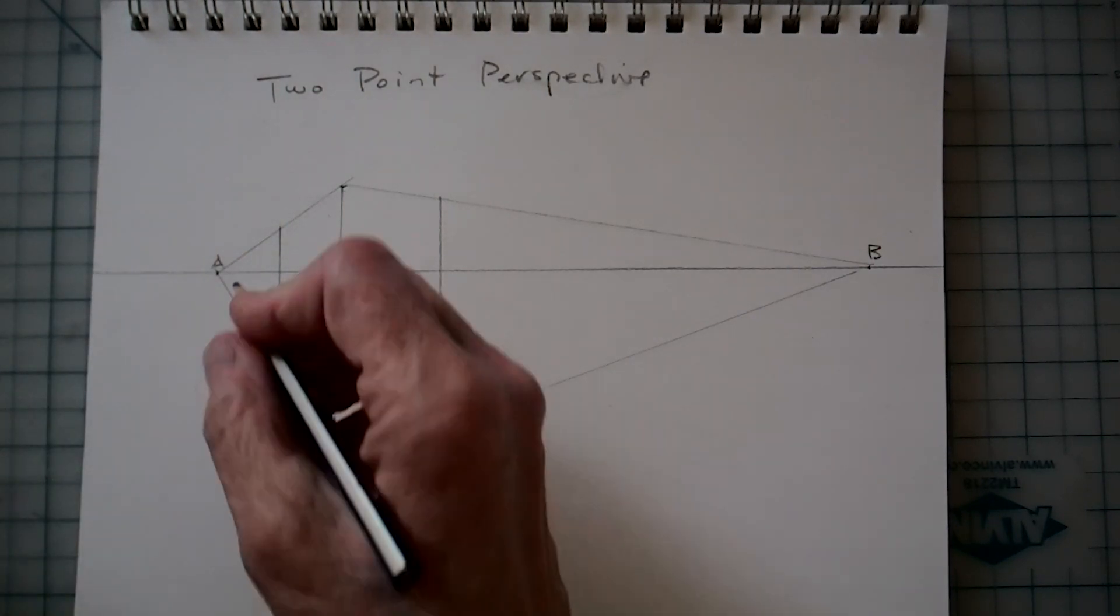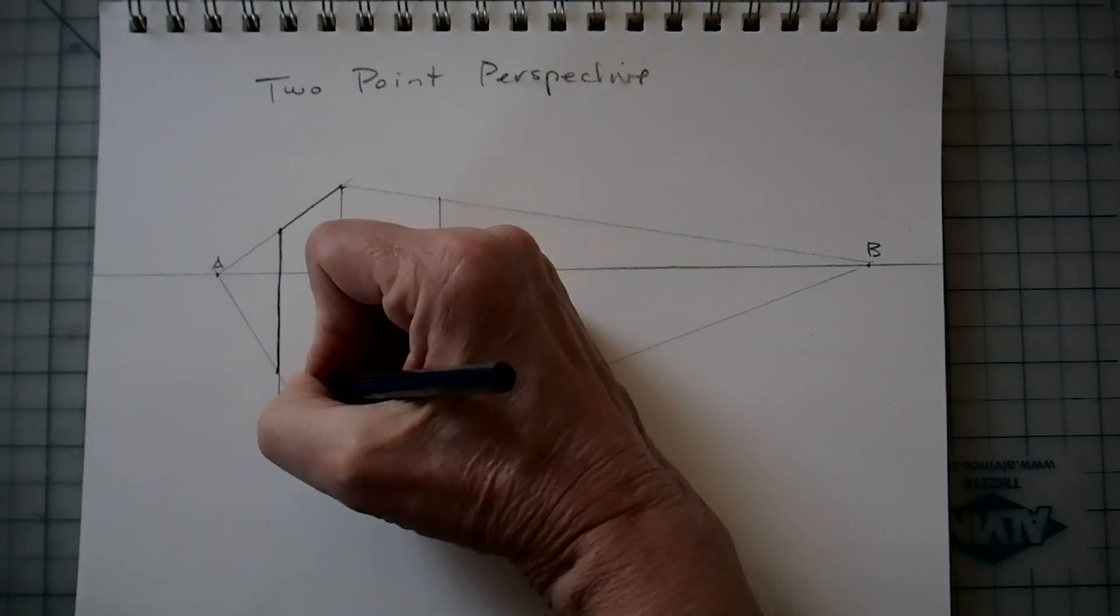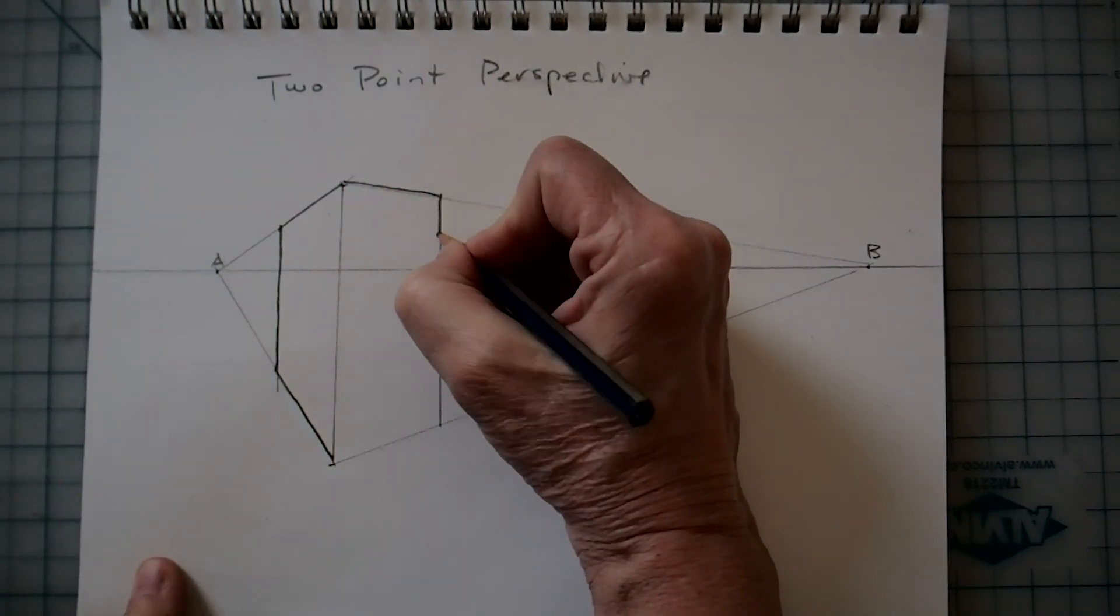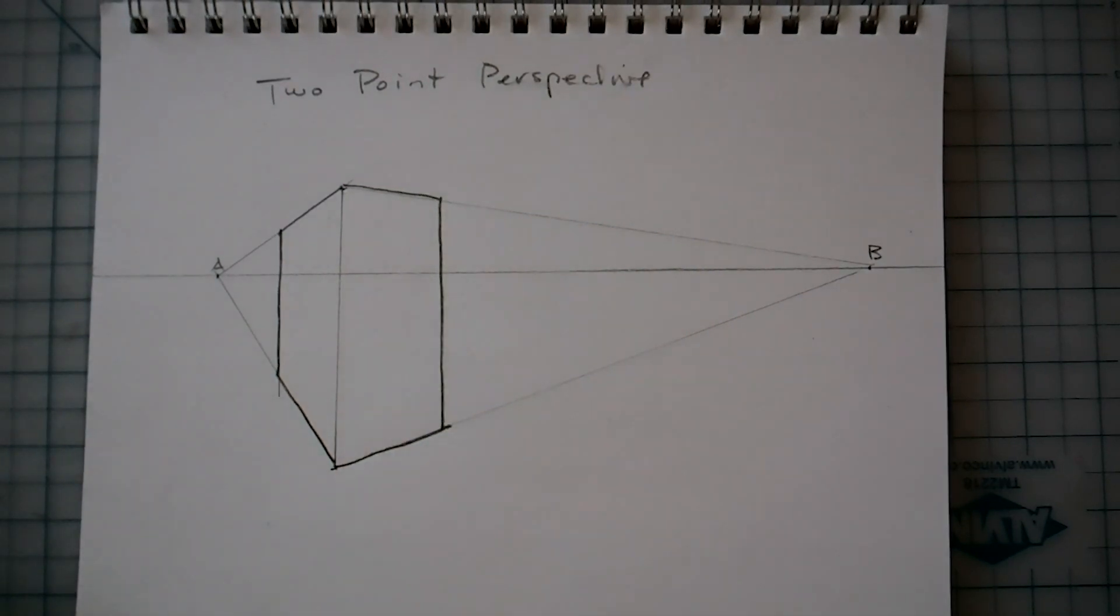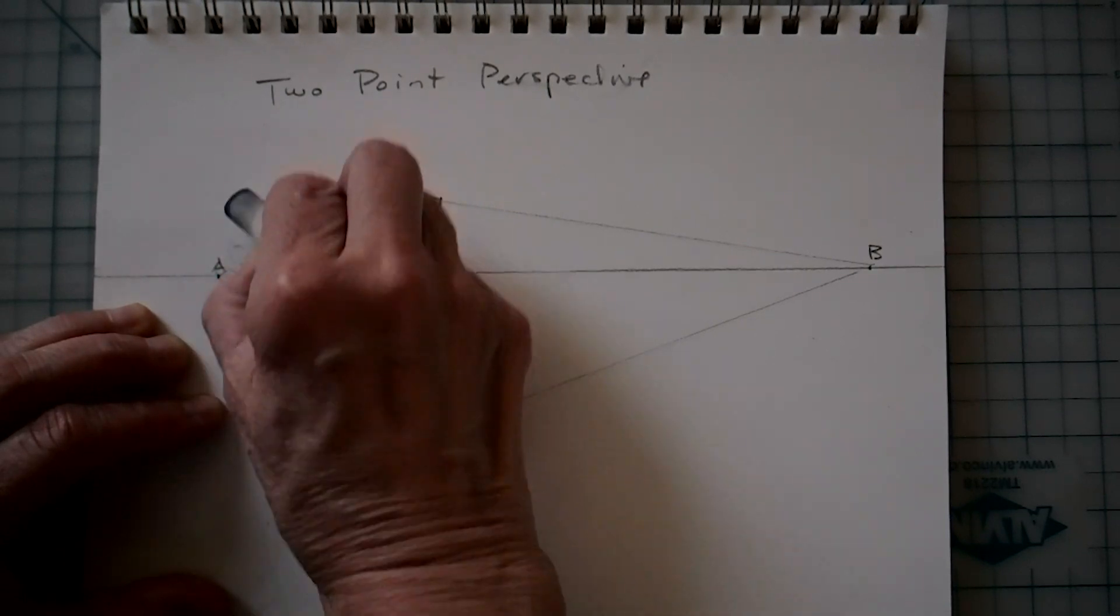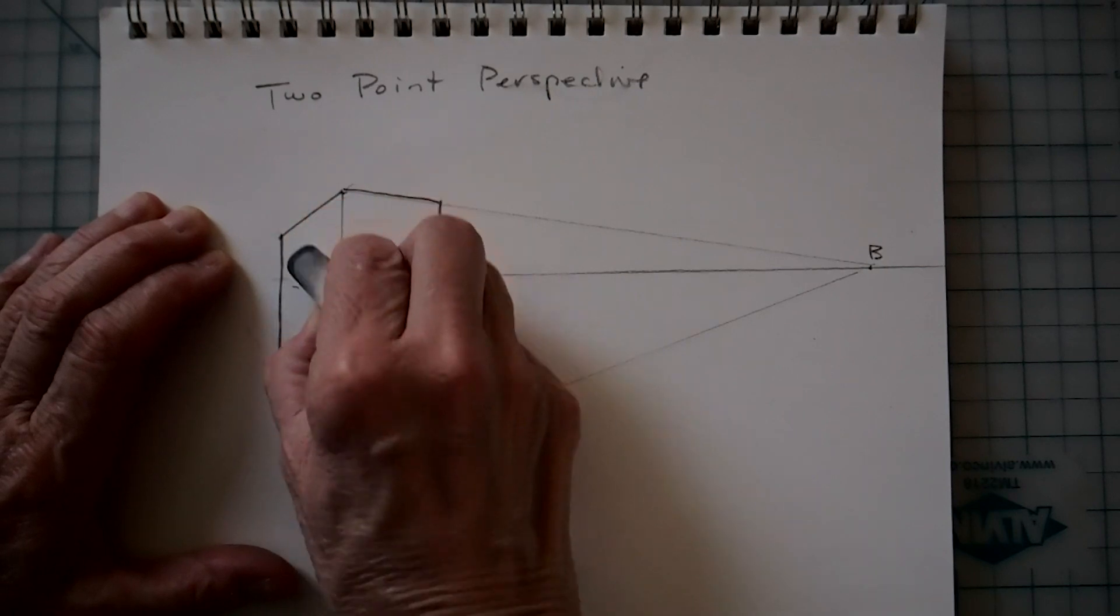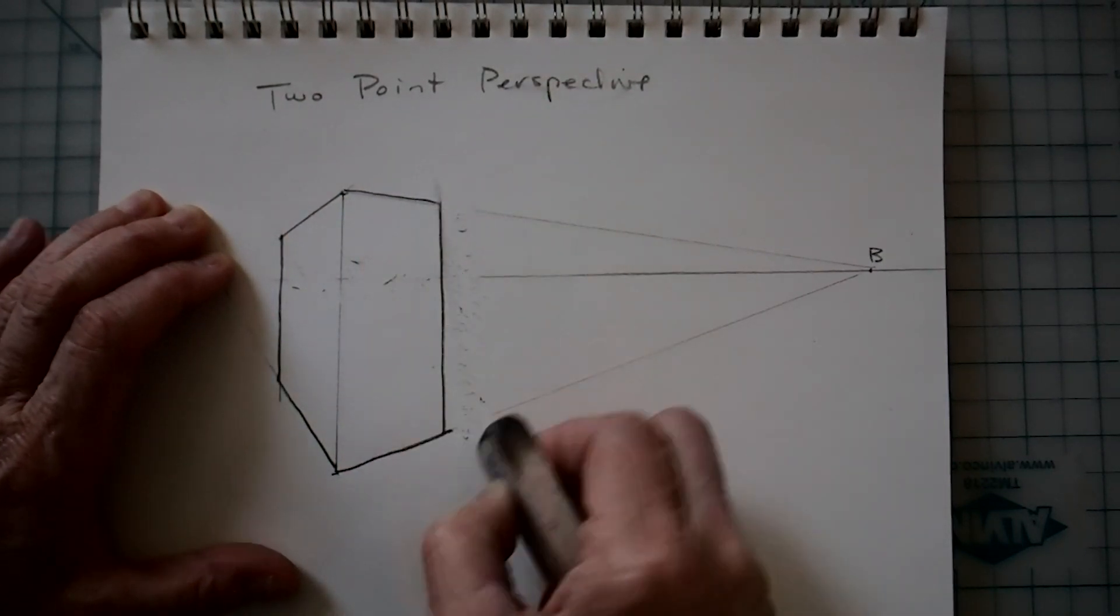Now you're going to go back and strengthen the lines of the box or the building or whatever it is that you're drawing. It could be back of a truck, a car, a house, it could be anything. And then with the eraser get rid of all these extra lines so that you can actually see the shape, the three-dimensional shape that you've drawn. Just don't erase your vanishing points A or B.